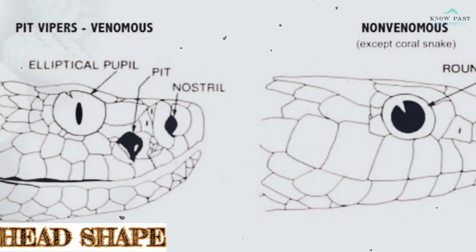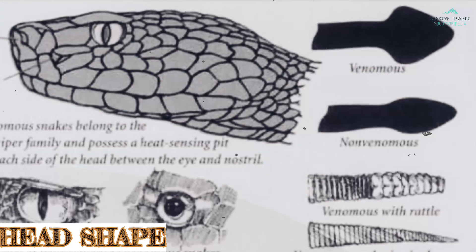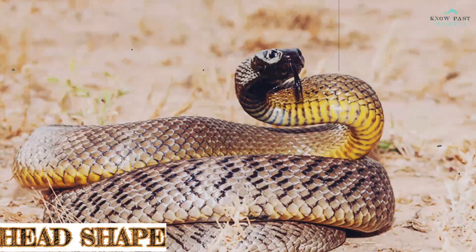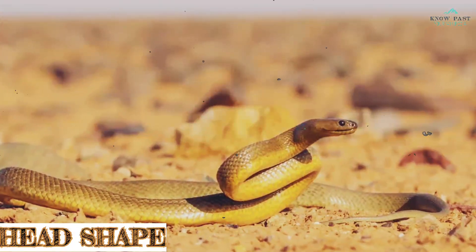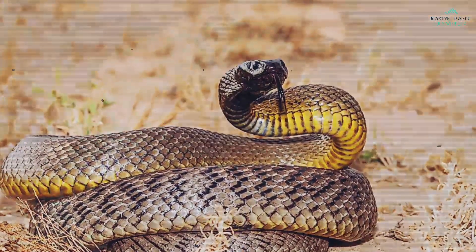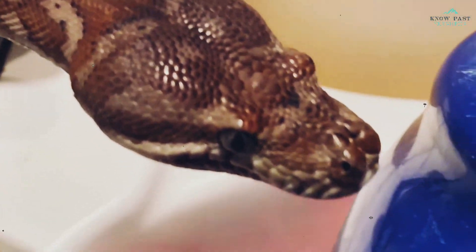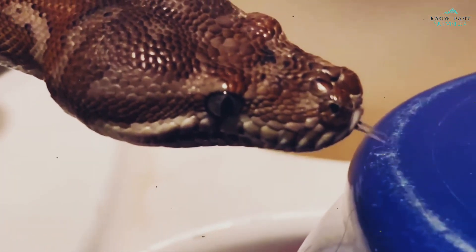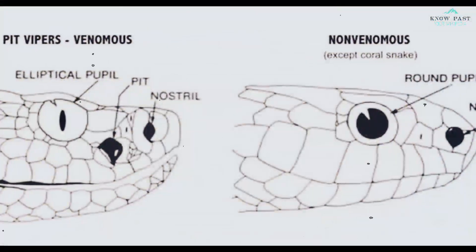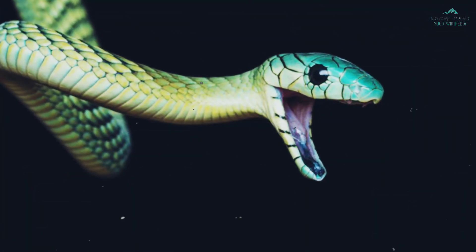One of the most noticeable differences is the shape of the head. Venomous snakes typically have a triangular or V-shaped head when viewed from above, while non-venomous snakes usually have a more rounded head. However, some non-venomous snakes may flatten their heads as a defensive mechanism to appear more intimidating, making identification tricky. Despite this, the base of a venomous snake's head is generally wider and tapers gradually toward the end, distinguishing it from non-venomous snakes.